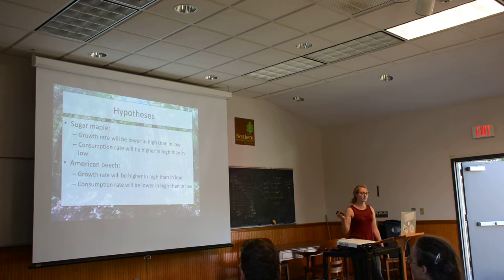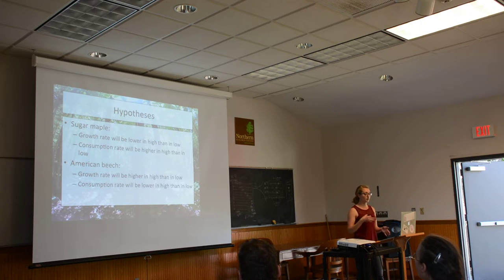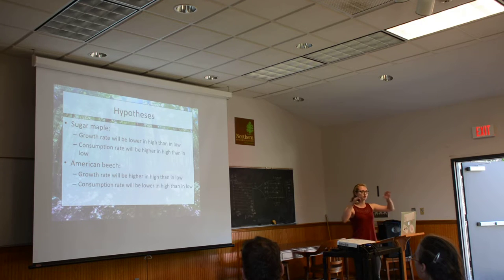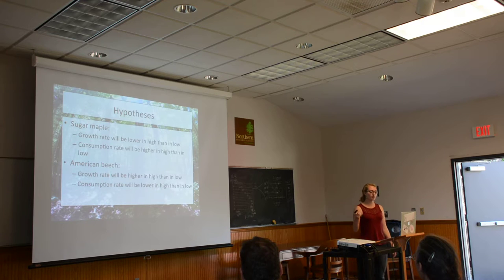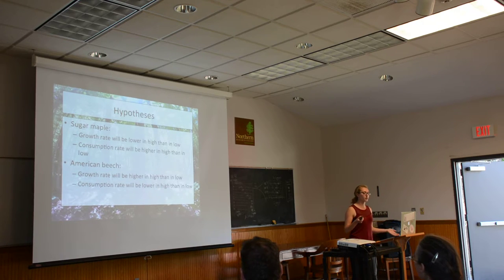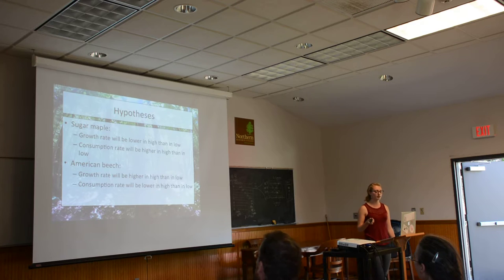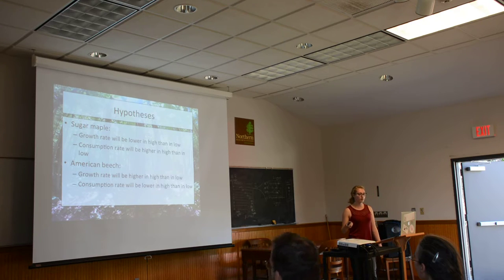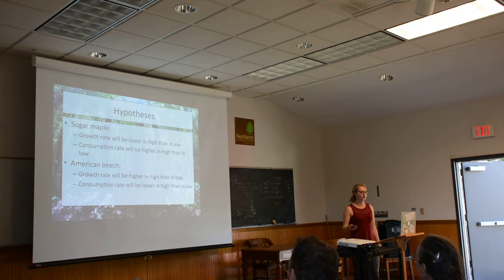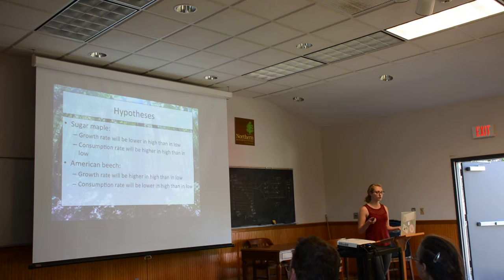Based on all of that background information, I hypothesized that the growth rate of caterpillars when fed sugar maple leaves from the high treatment plots would be lower, because those canopy leaves would sustain more damage and be of lower quality. Consumption rate — how much they were eating — would be higher in the high treatment plots because they would have to eat more food to grow the same amount. For American beech, I hypothesized that caterpillar growth rate would be higher in the high treatment plots, because understory beech would have more light coming in and higher quality leaves, so they would grow more. Consumption rate would be lower in the high treatment plots because they could eat less to grow the same amount.